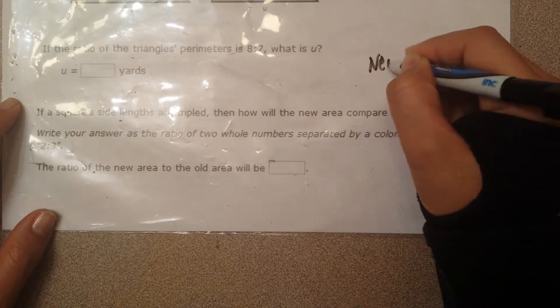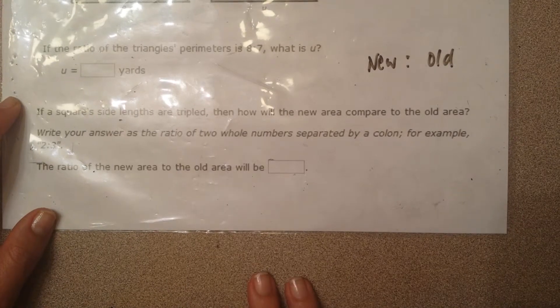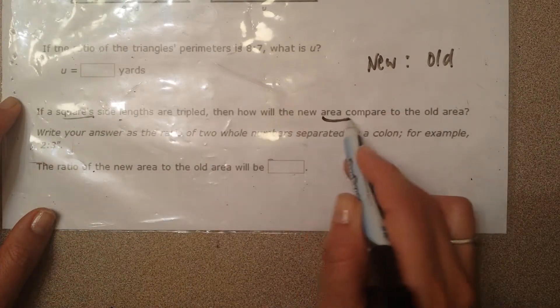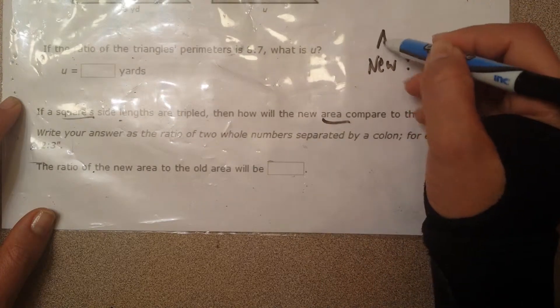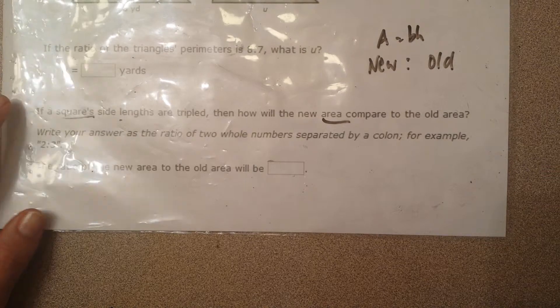So you're going to look at new to old in that order, new to old. Several ways you can do this. So you're talking about a square and talking about area. So the area of a square is base times height. I'm going to teach you algebraically and then show you by just making up numbers.